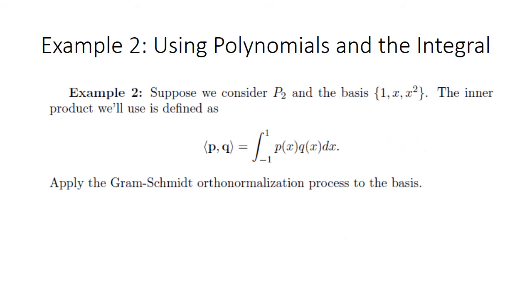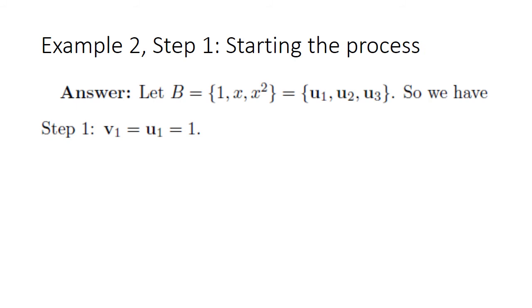In the next example, we use polynomials and the integral to demonstrate the Gram-Schmidt orthonormalization process. We consider a basis in the space of polynomials of degree two or less — that is, the vectors 1, x, and x². The inner product is defined as the integral from −1 to 1 of the product of two functions. We denote U1 = 1, U2 = x, and U3 = x², and the process starts by setting V1 equal to U1, so our first orthogonal vector is simply the number 1.